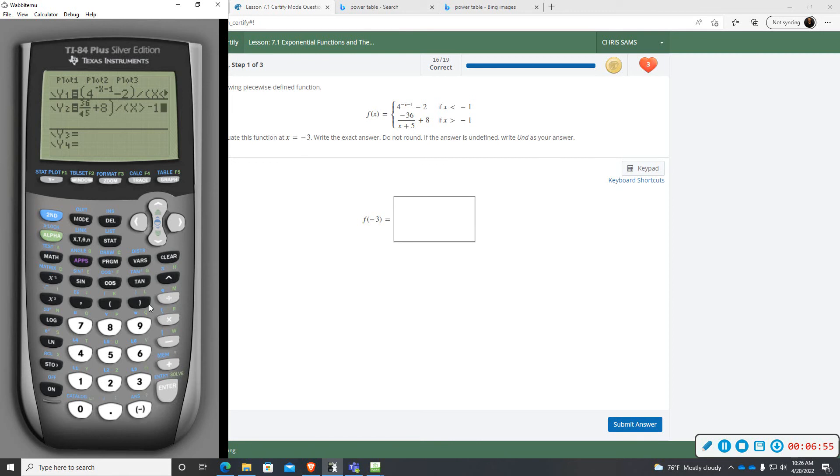I'm going to open parentheses x and then second math or test and this time you want greater than so that's option 3 and then negative 1. Be sure you do the negative below the 3 and not the minus. It will cause problems if you do minus 1.